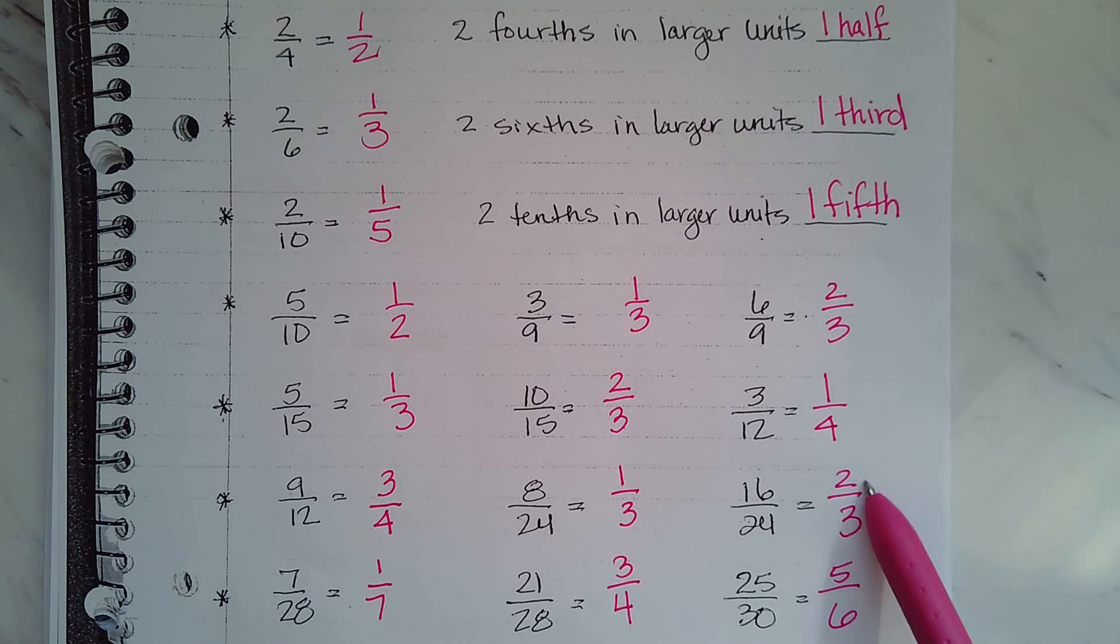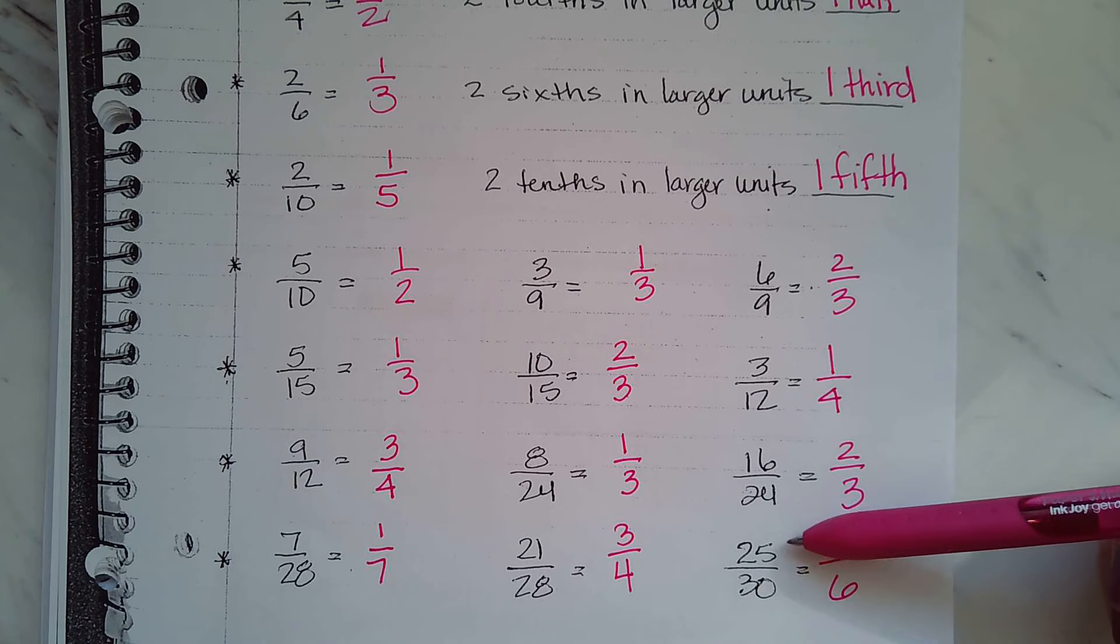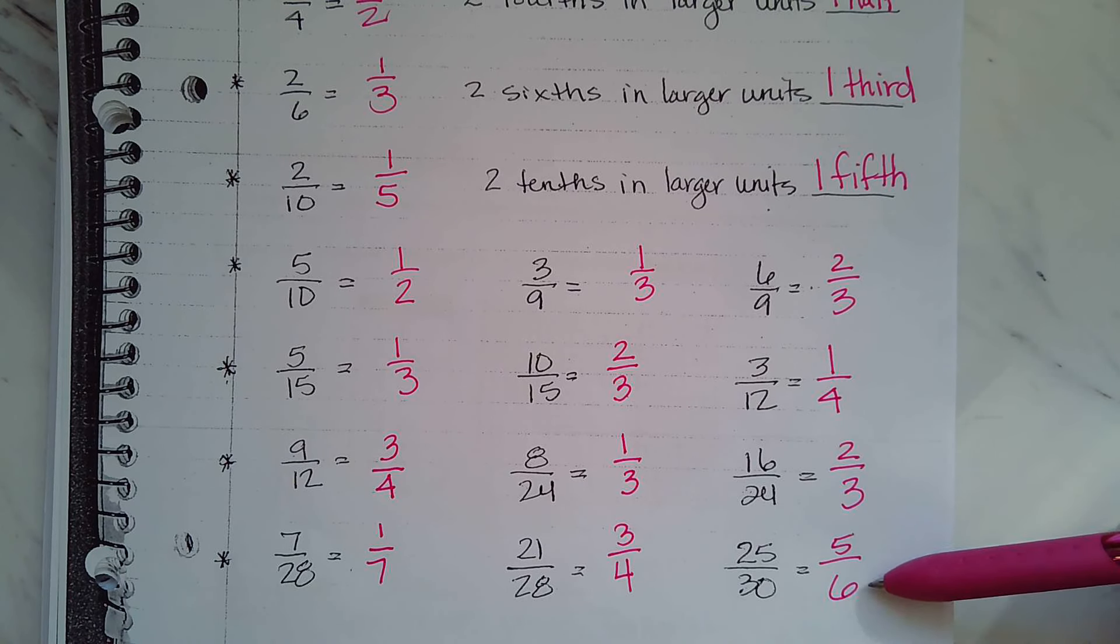Nine-twelfths is three-fourths, eight-twenty-fourths is one-third, sixteen-twenty-fourths is two-thirds, seven-twenty-eighths is one-seventh, twenty-one-twenty-eighths is three-fourths, and twenty-five-thirtieths is five-sixths. So this needs to become automatic. Hopefully this is in your back pocket and you've got this down by now.